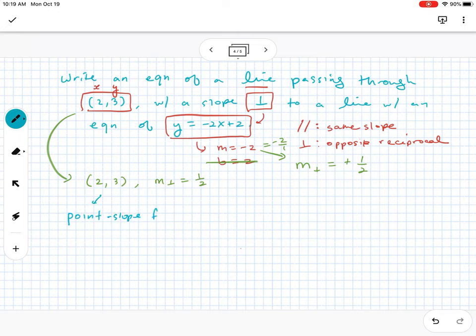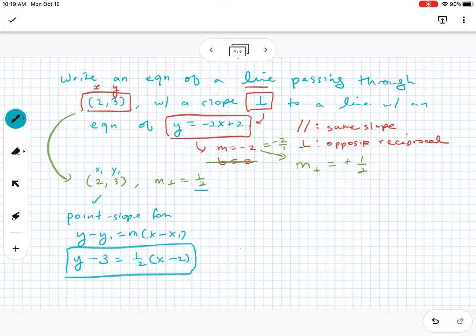At this point, there's a couple of ways you can go about it. First, if you want to be super technical, you can use point-slope form, which is y minus y1 equals m times x minus x1. So there's my x1, there's my y1, there's my m. So y minus 3 equals 1 half times x minus 2. And technically, you are finished.